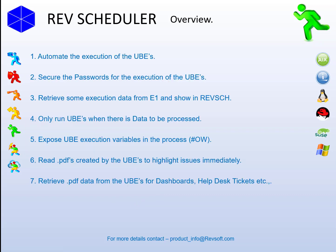Just in case any of you skipped the theory video, here are the seven tasks we wanted to be able to do within RevScheduler and Enterprise 1: automate the execution of the UBEs, secure the passwords so no visible passwords anywhere, retrieve some execution data and show it in RevScheduler, only run UBEs when there's data to be processed (UBEs on demand), expose UBE execution variables within the process so they could be used by other scripts in the same job, read the PDFs created by the UBEs to highlight any issues immediately, and retrieve PDF data from the UBEs for dashboards, help desk tickets, etc.